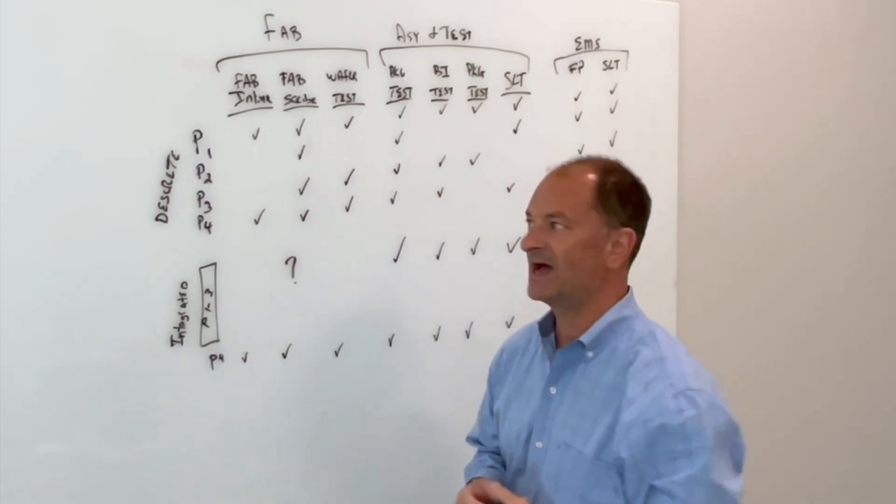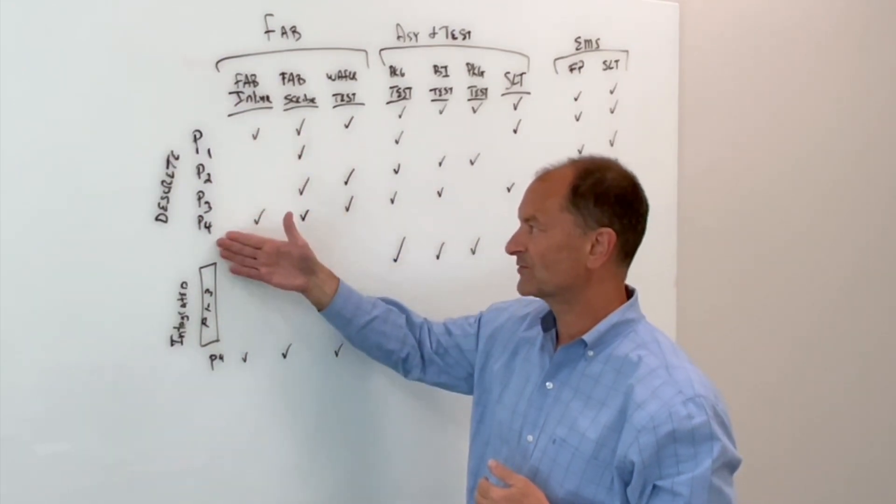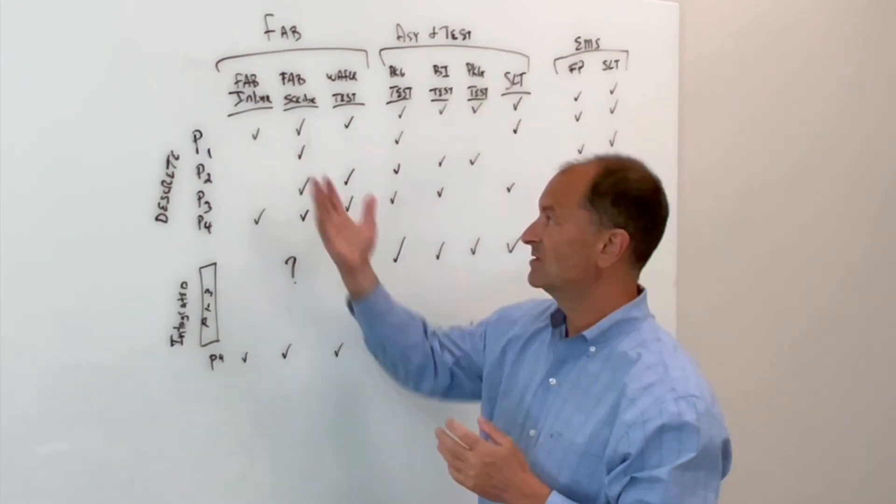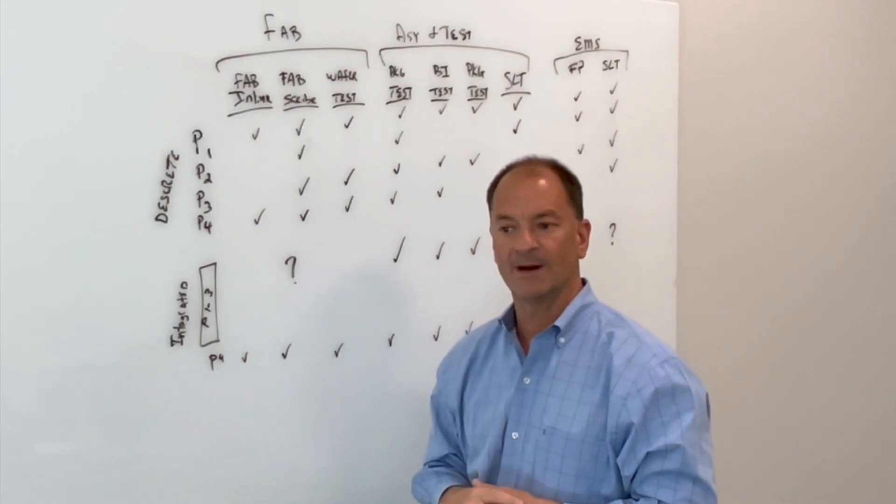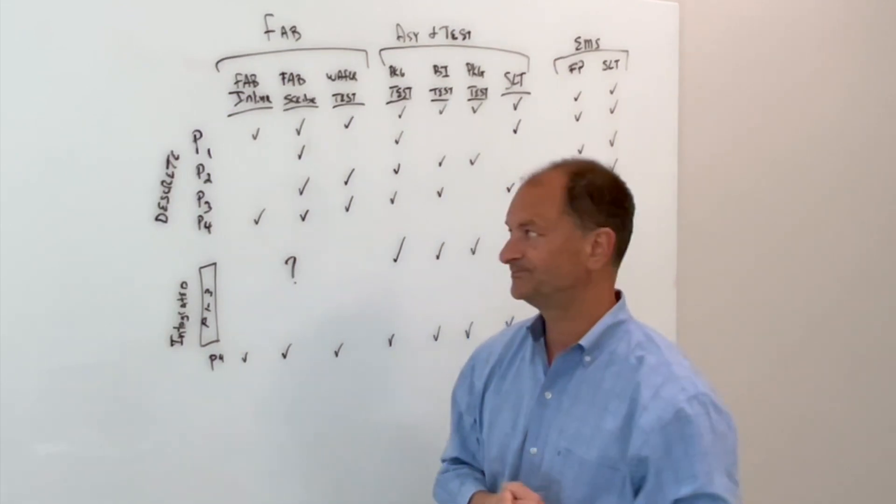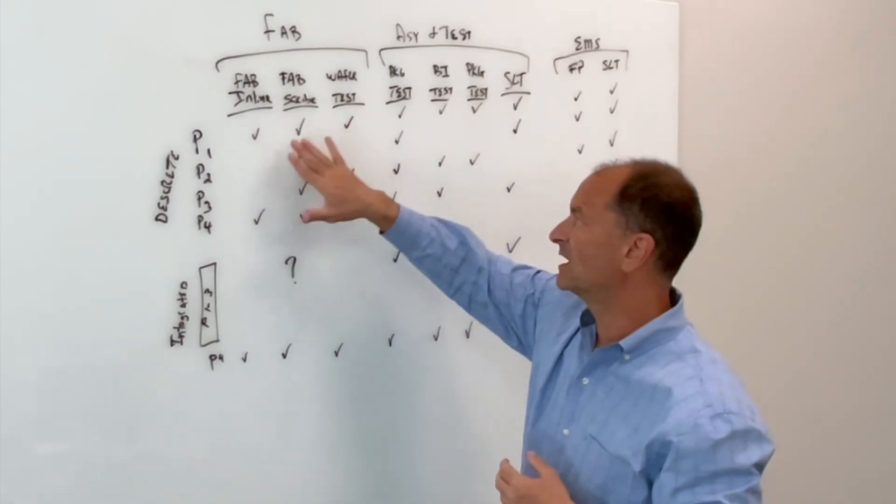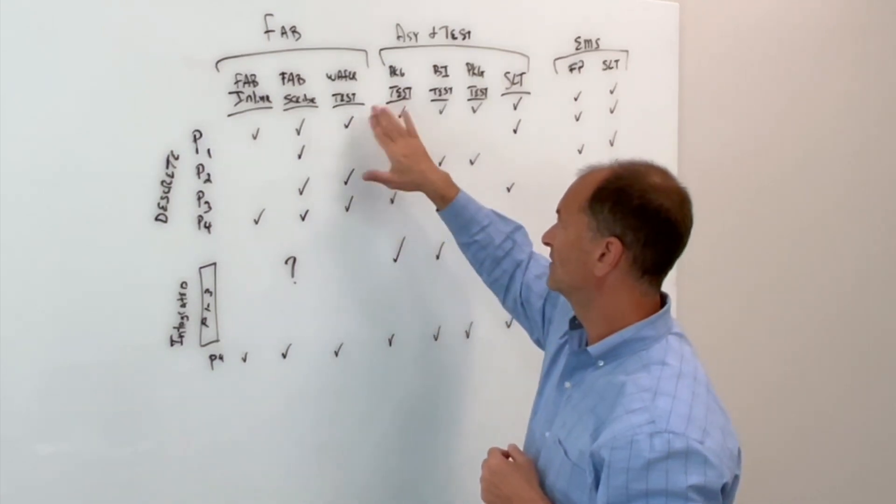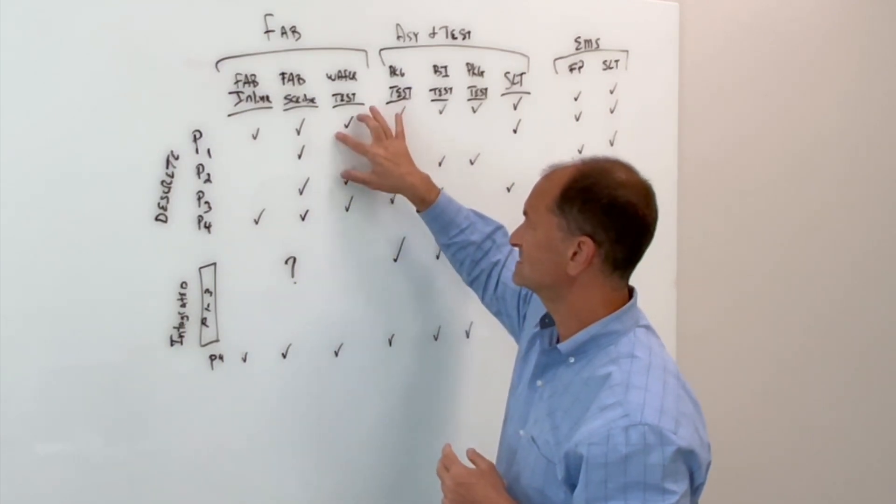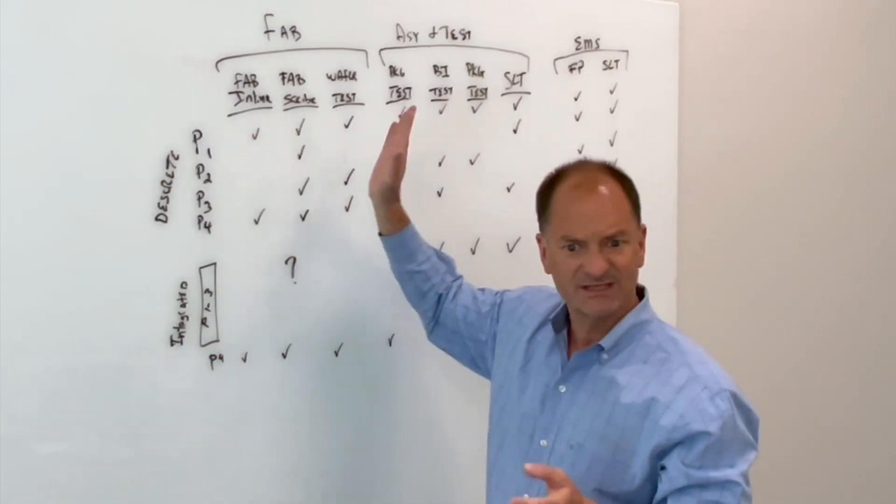So if we think about it, originally we had maybe in this particular example, four chips. So product one, product two, product three, and product four. Call them discrete chips. And they're all going through a wafer fab in wafers. One of them might be on a 300 millimeter wafer. Another one might be on a 200 millimeter wafer. Another one might even be on a gallium arsenide wafer. And they're making their way through the factory. And there are certain tests that the factory will do in line, maybe some scribe line testing. Then they'll go into wafer sort and get some testing there. And the test list will be tailored to what that product needs and then what's going to happen downstream.